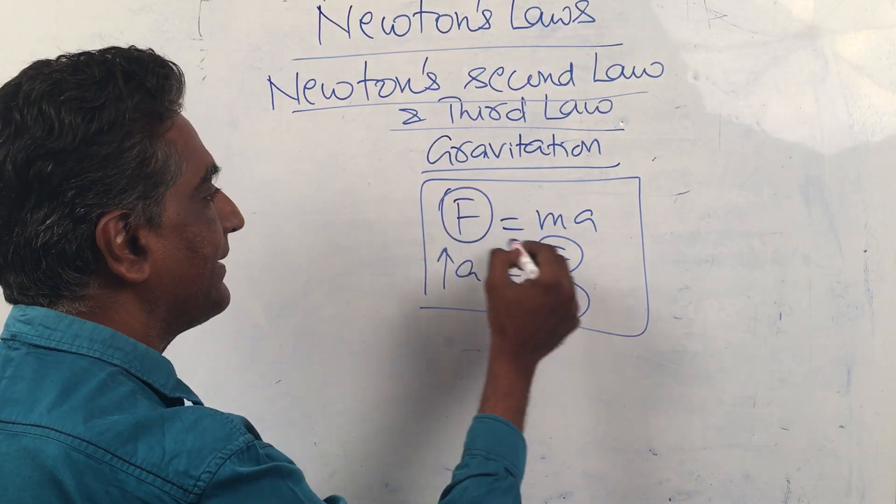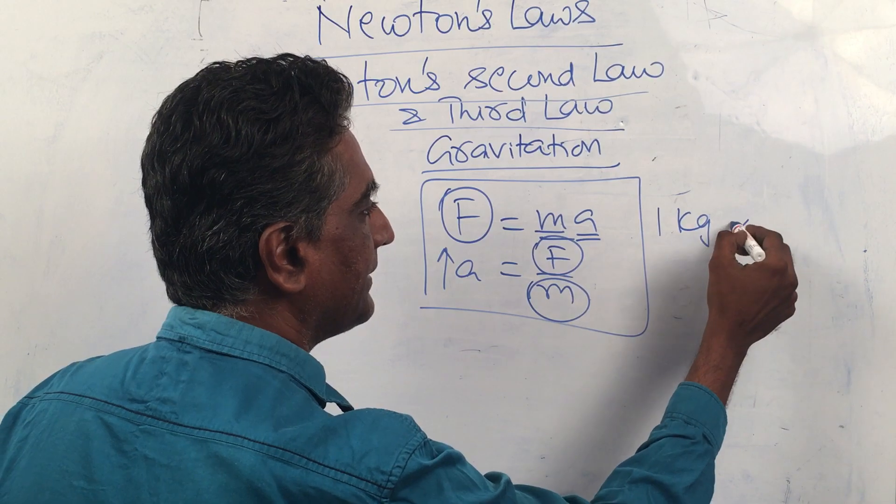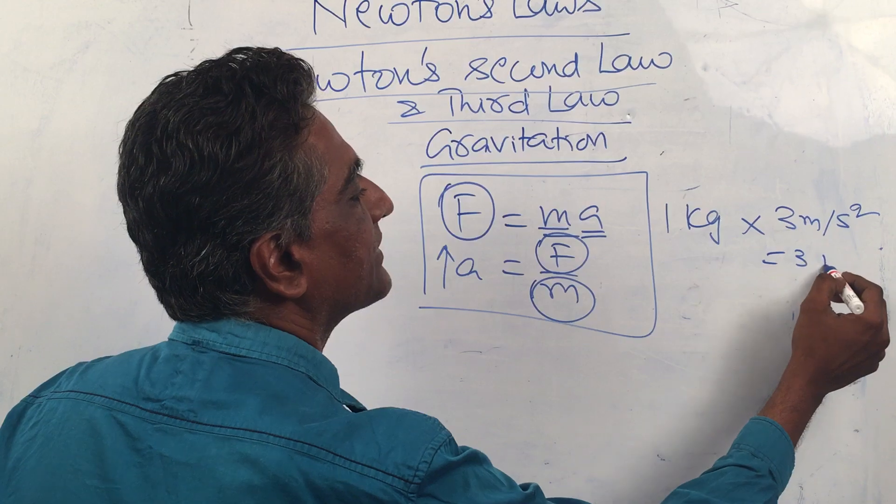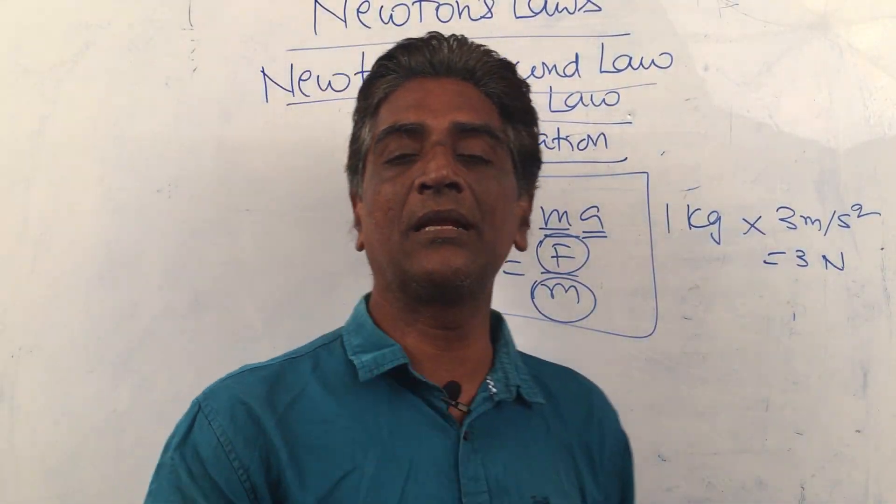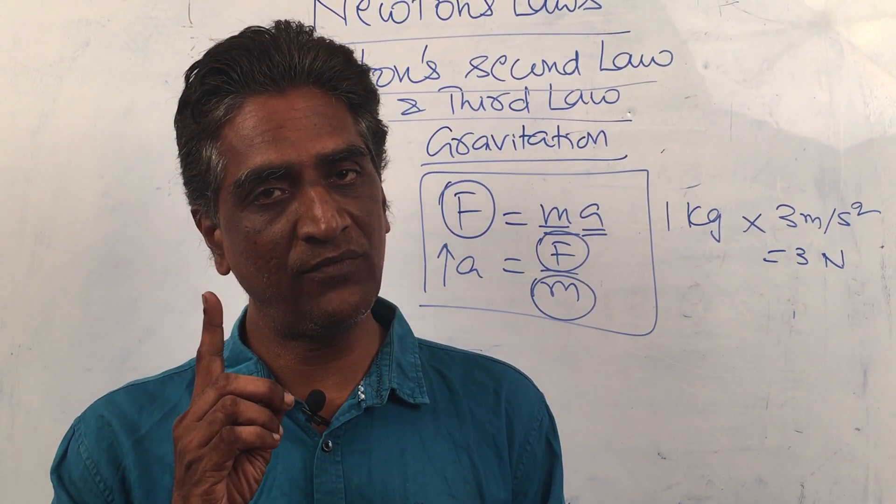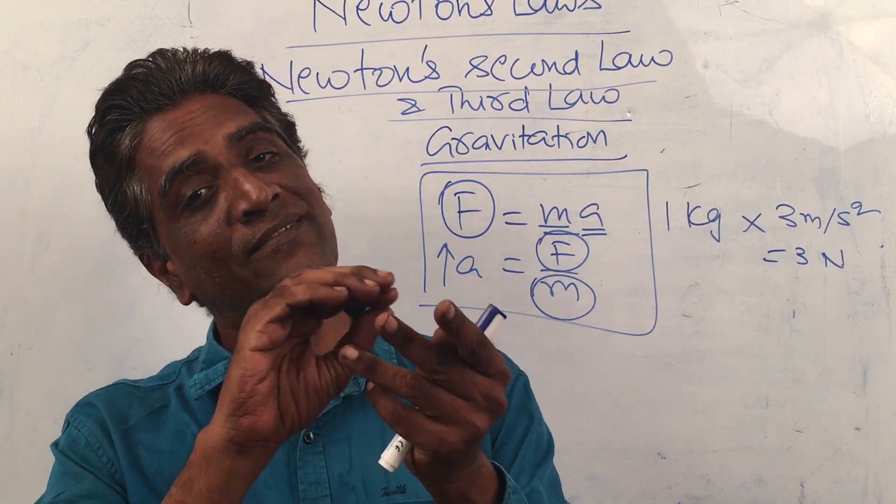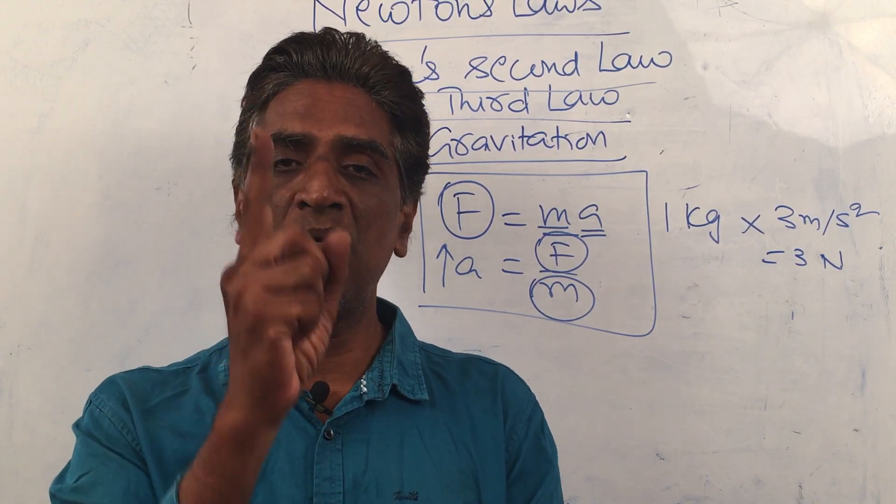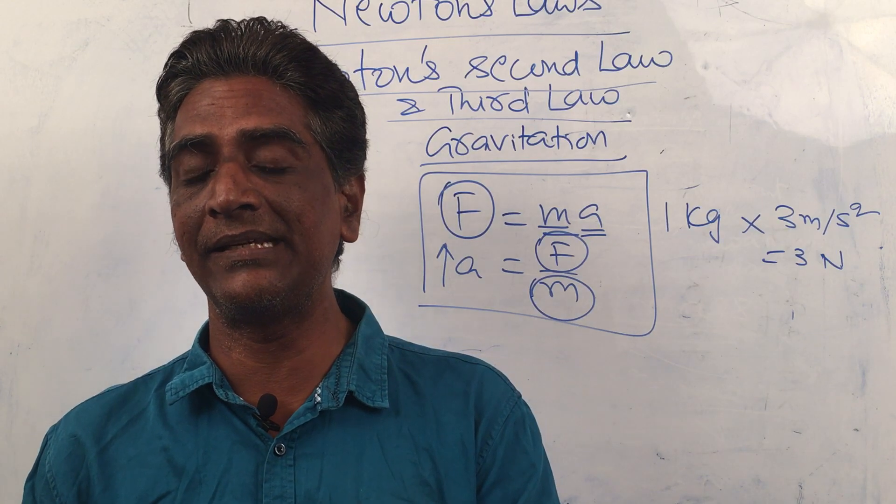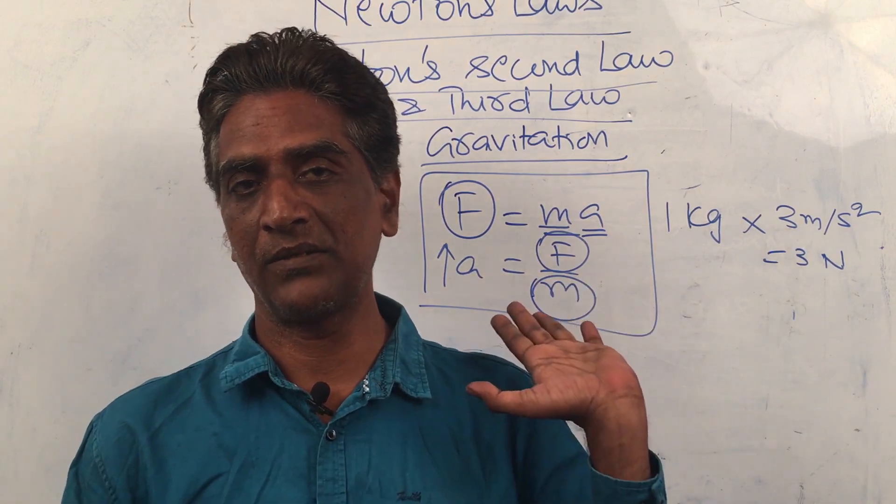F has to be defined as mass into acceleration. Suppose you have 1 kg mass and the acceleration came out to be 3 meters per second square, then we define that 3 Newtons was applied. 1 Newton is that force which given to a body of 1 kg gives it an acceleration of 1 meters per second square.